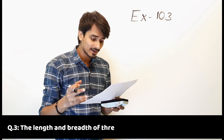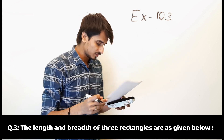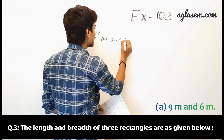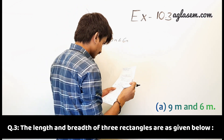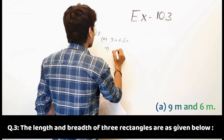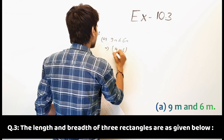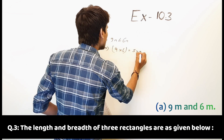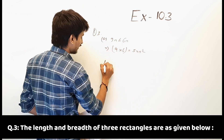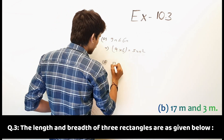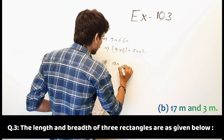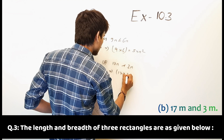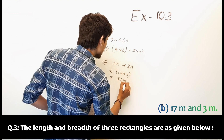Third question: the length and breadth of 3 rectangles are given below. Part A: 9 meter and 6 meter. So 9 multiplied by 6 is equal to 54 meter square. Part B: 17 meter and 3 meter. So 17 multiplied by 3 is equal to 51 meter square.